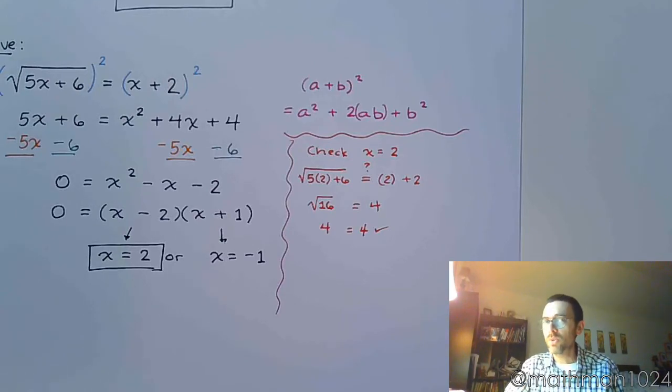Now we've got to check x equals negative 1. We might get something extraneous. Or we might get that it works as well. Which means we're going to have two solutions. So let's check.